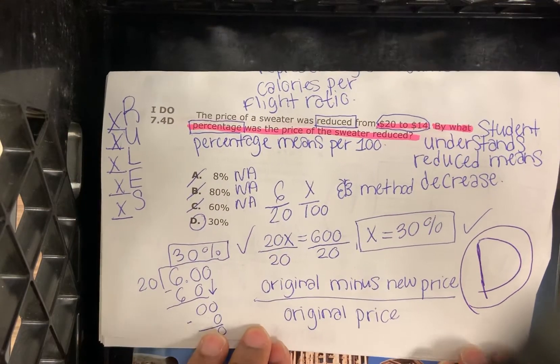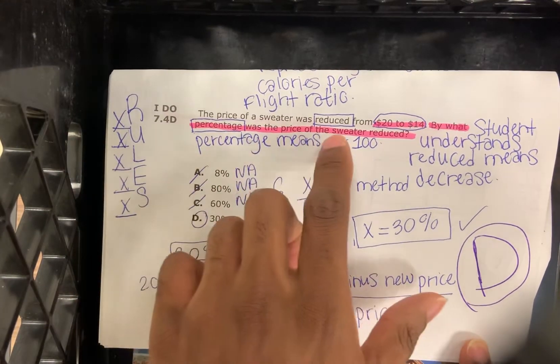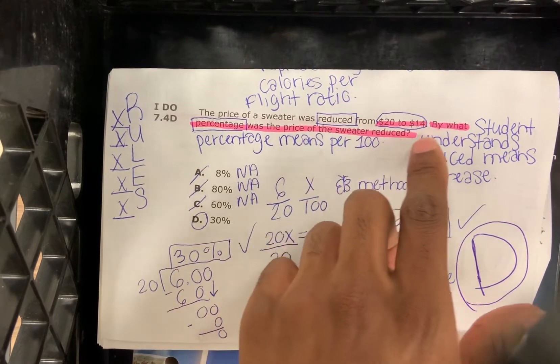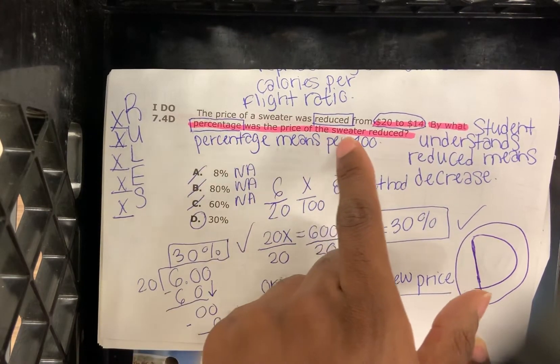All right, I do 7.4 D. The price of a sweater was reduced from $20 to $14. By what percentage was the price of the sweater reduced?